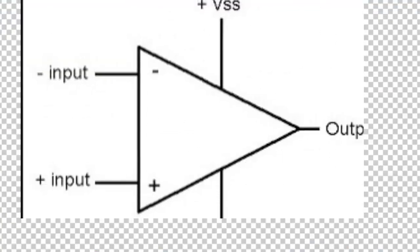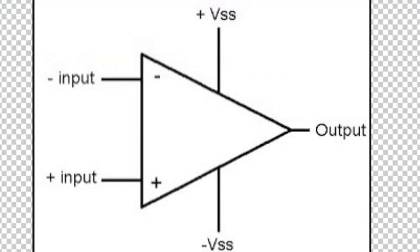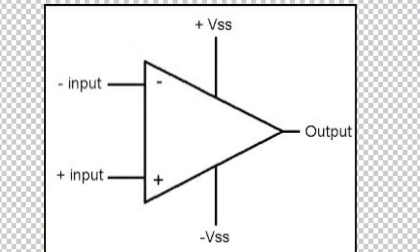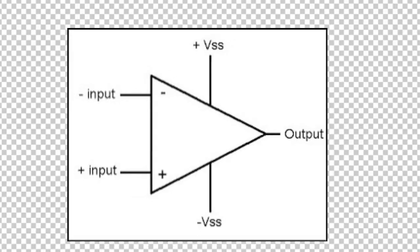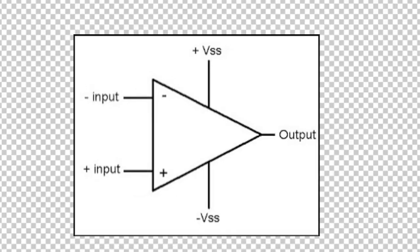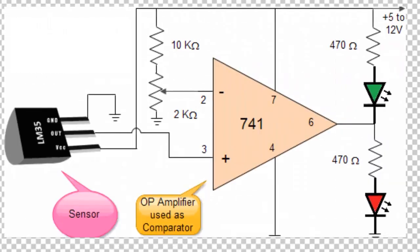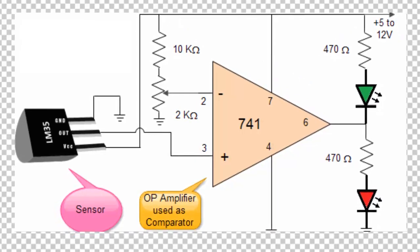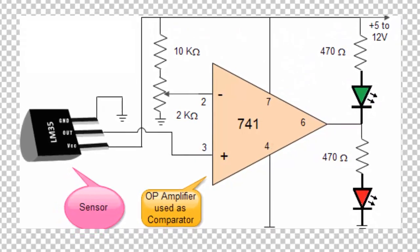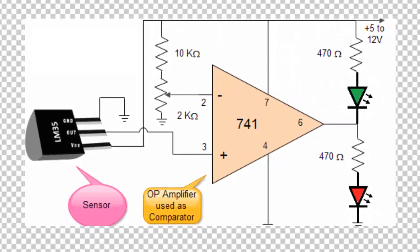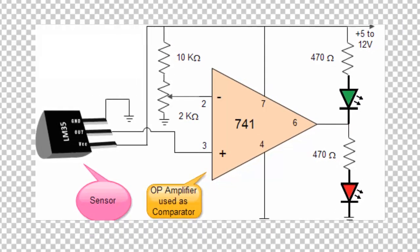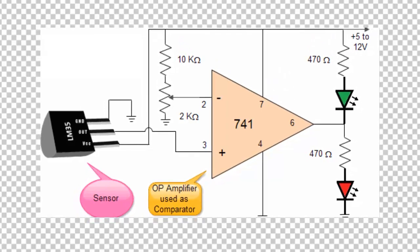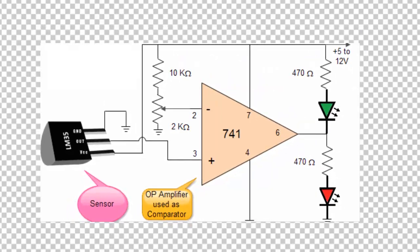So, comparator. Let us compare output voltage. Let us take an example — we have a sensor. We have a minimum of 1V, 1.5V, and we can read that voltage.